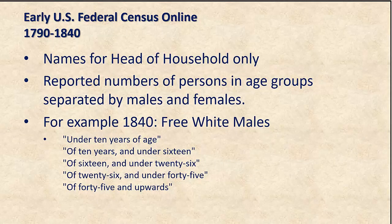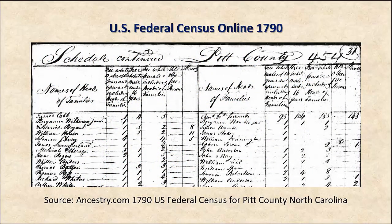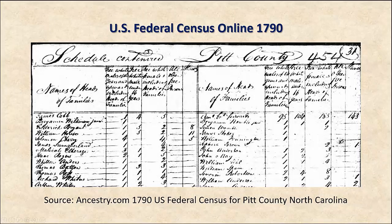If we look at what that might look like, this is an example of the 1790 census. As you can see, it is really kind of hard to read. This says free white males of 16 years and upward.